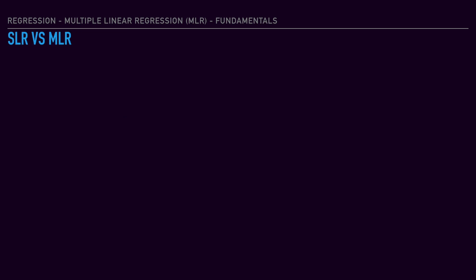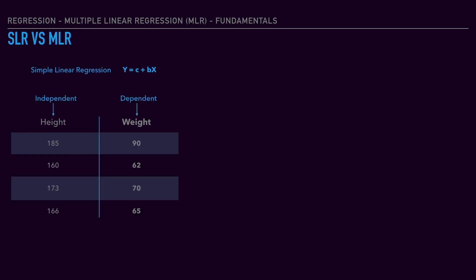Let's understand the difference between SLR and MLR. We have the simple linear regression formula: y equals constant plus coefficient of x into x. If we look at each input and output variable, that is one dependent variable and one independent variable. But in a real world scenario, we get multiple independent variables to predict one dependent variable, so we go to multiple linear regression.